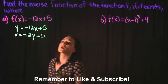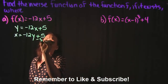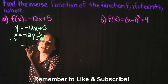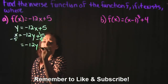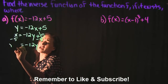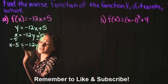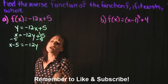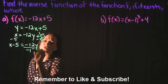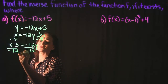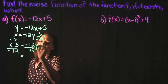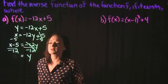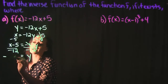Step three: solve for y. The first thing I'm going to do is subtract 5 on both sides — it cancels on the right, leaving negative 12y. On the left we have x minus 5. Then we divide both sides by negative 12 to cancel out the coefficient on the right, leaving us with y.